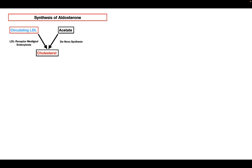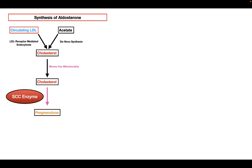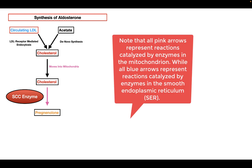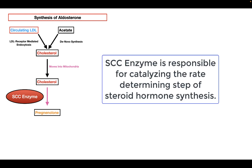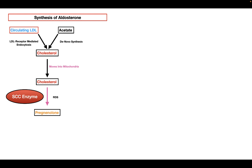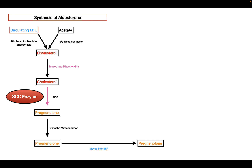The first step is that cholesterol has to move into the mitochondria. Once it's in the mitochondria, the cell converts cholesterol into pregnenolone using the enzyme SCC, also called the side chain cleavage enzyme. The side chain cleavage enzyme is very important because it catalyzes the rate-determining step of aldosterone synthesis. After pregnenolone is formed, it moves out of the mitochondria and into the smooth endoplasmic reticulum, where it undergoes the remaining series of reactions to form aldosterone.